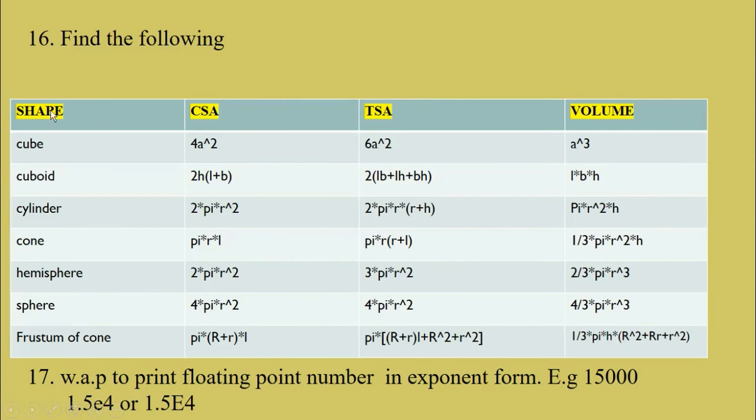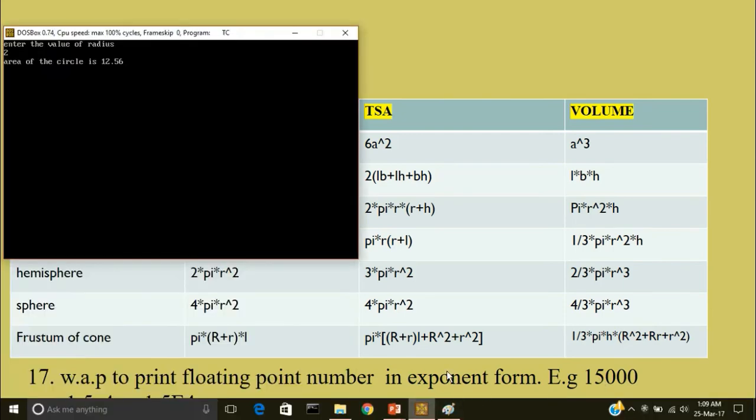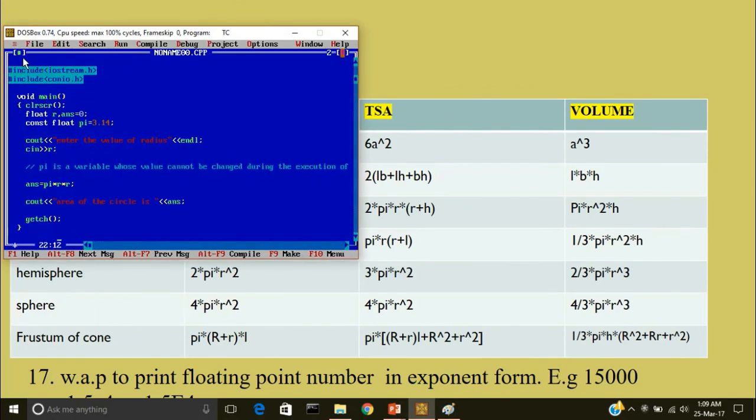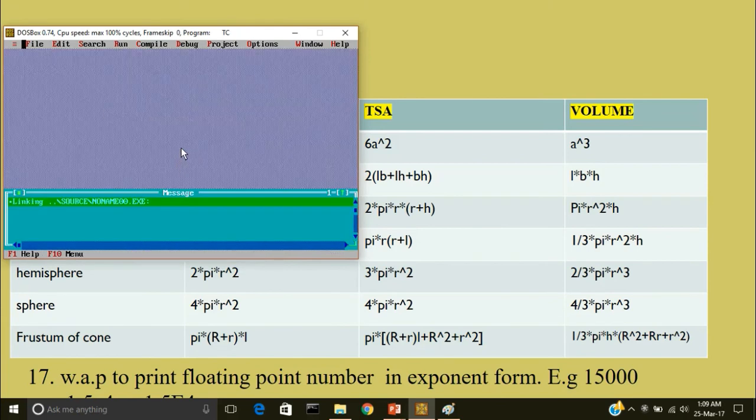So find the following. So here we have four column shapes. CSA stands for curve surface area. TSA stands for total surface area and volume. So cube. The formula to find the curve surface area of cube is 4a raised to the power 2. So these are all easy which you can do these by yourself. So I'll move on to question number 17. Write a program to print floating point number in exponent form. Example, we have a number 15,000. We have to write it in exponent form. We will write this program. Instead I'll go to file. No I don't want to save. New.